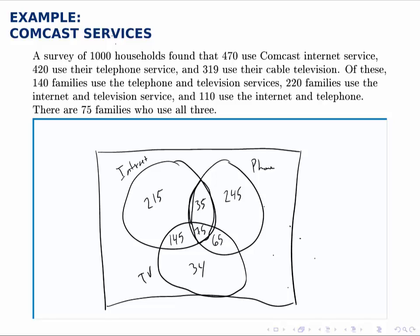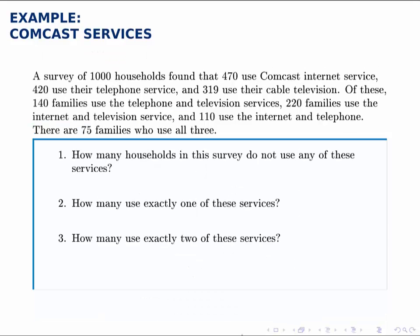We know that there are 1000 people total, so we need to fill in how many were surveyed but do not fall into any of these circles. Adding all the values up and subtracting from 1000, we get 186. Now that the whole diagram is filled in, we're ready to answer some questions.